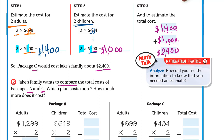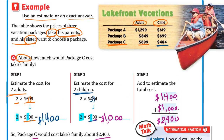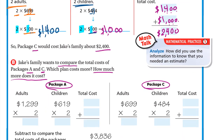Letter B: Jack's family wants to compare the total cost of package A and package C. Which plan costs more, and how much more does it cost? We need the total cost for each package. For package A, the adult price is $1299 and the child price is $619. So we multiply 1299 by 2 for the parents and 619 by 2 for the children, then add to get the total cost for package A.